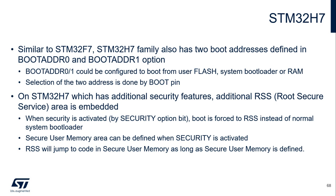Similar to F7, STM32H7 also has two boot addresses defined in boot address 0 and boot address 1 option bytes, both configurable to boot from user flash, system bootloader, or RAM, with selection done by a boot pin. On some H7 variants with additional security features, there is also an embedded secure bootloader area known as RSS, or root secure service. When security is activated on those devices, boot is forced to RSS instead of the normal system bootloader. When the security bit is activated, a secure user memory area can also be defined, and RSS will always jump to an address within the secure user flash.